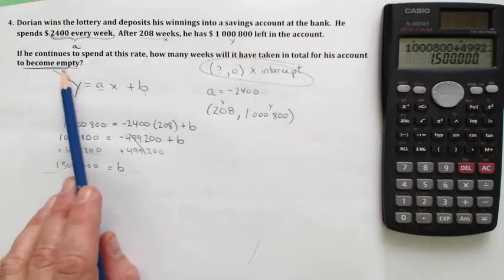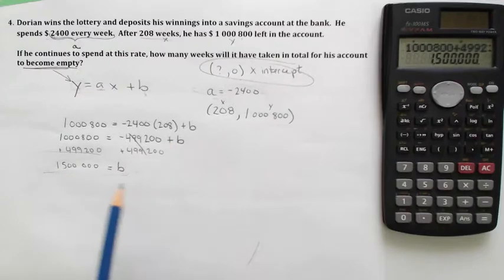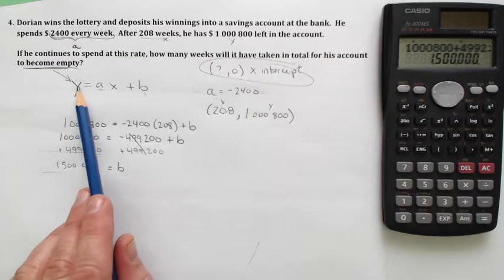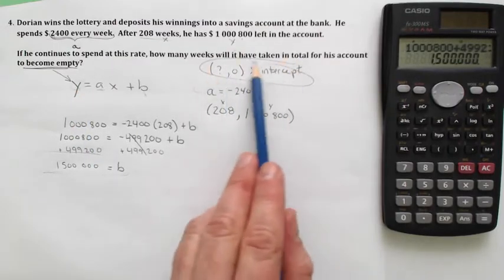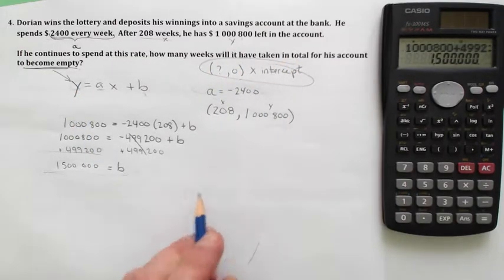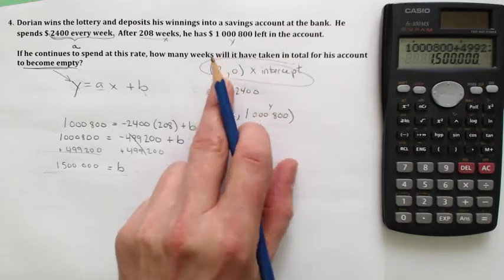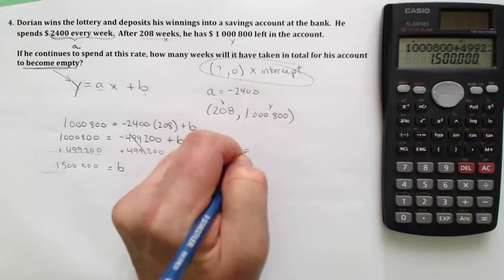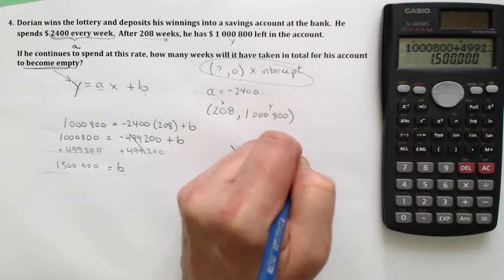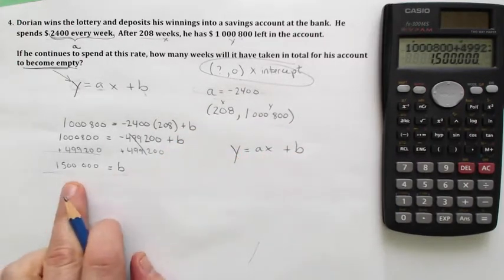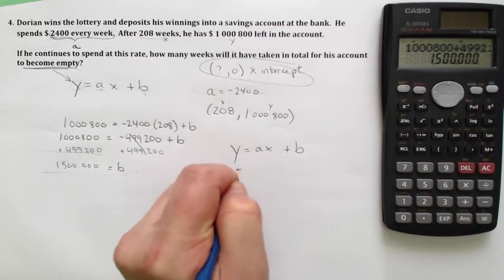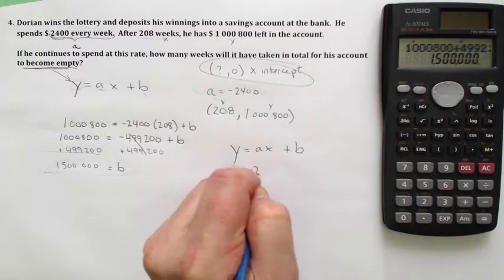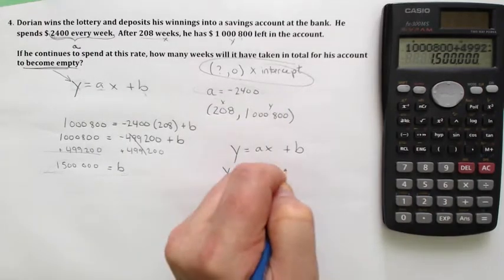So now that we have the pieces, we can answer the actual question about when the Y is equal to zero—in other words, that X-intercept. So how many weeks have to go by for him to have nothing? Well, we write the equation that we figured out. Y equals ax plus b can now be written as Y equals negative 2,400x plus $1,500,000.